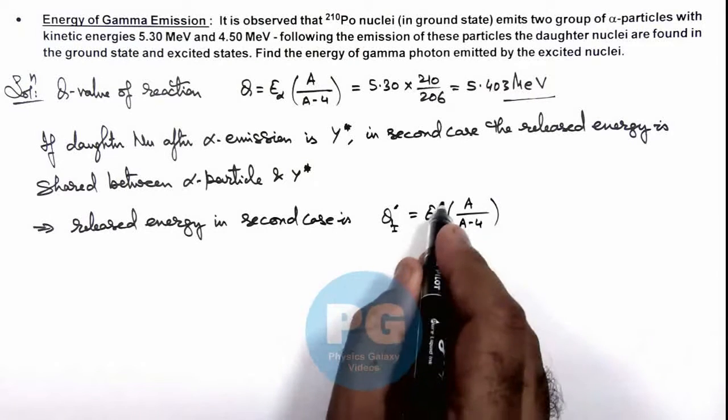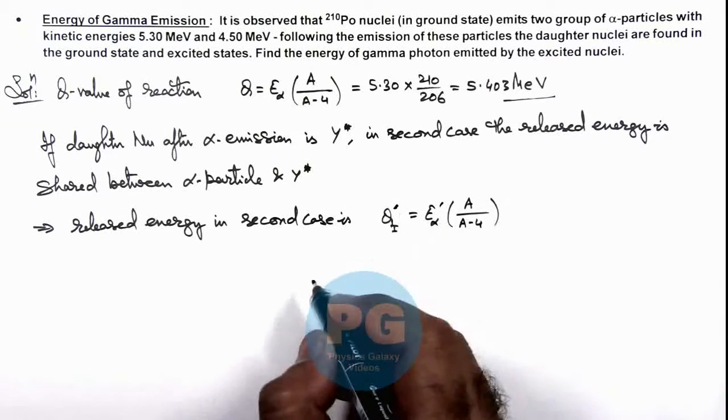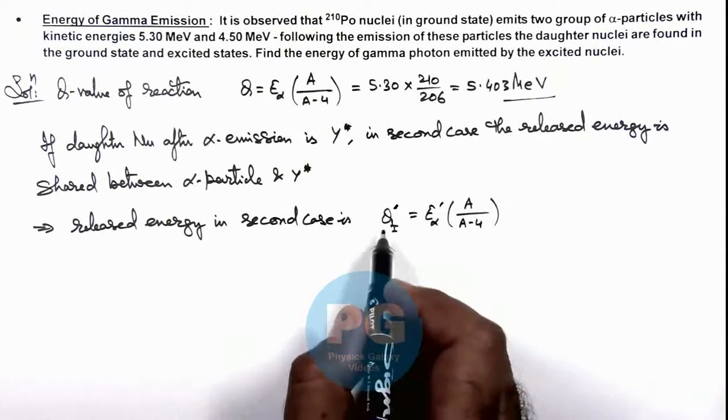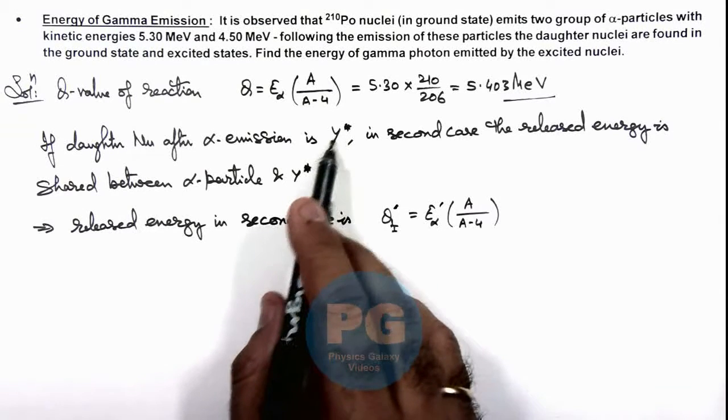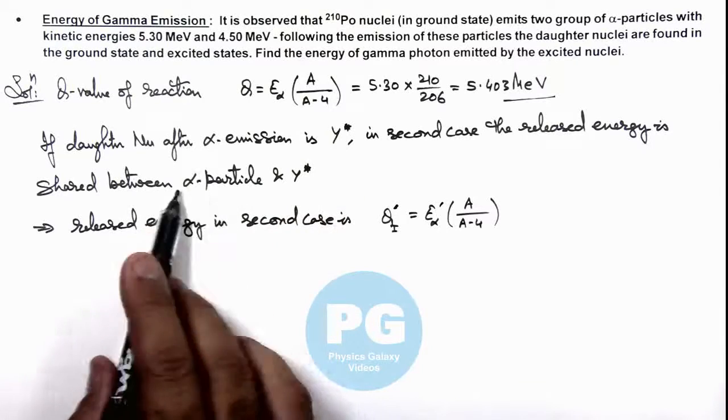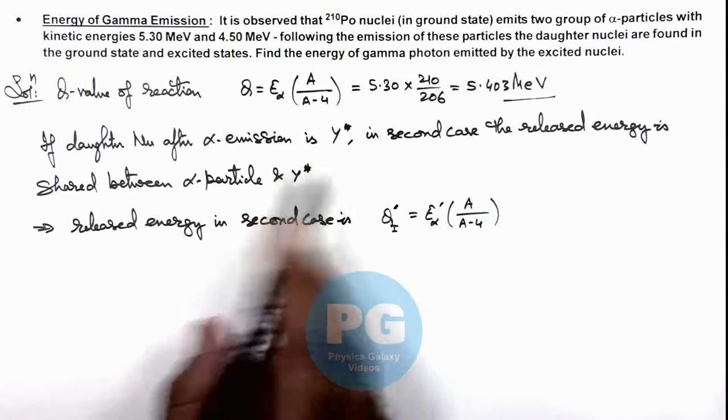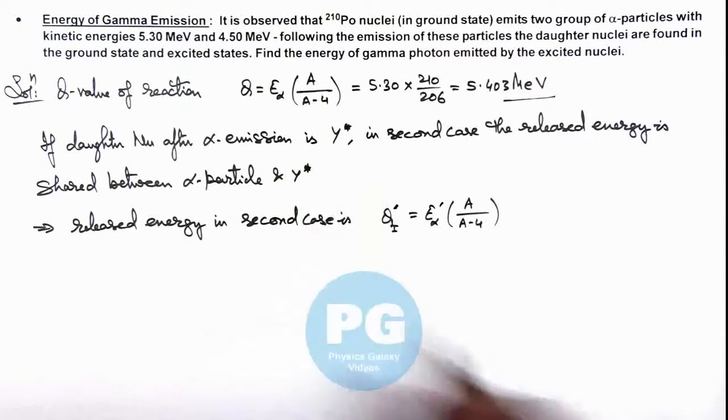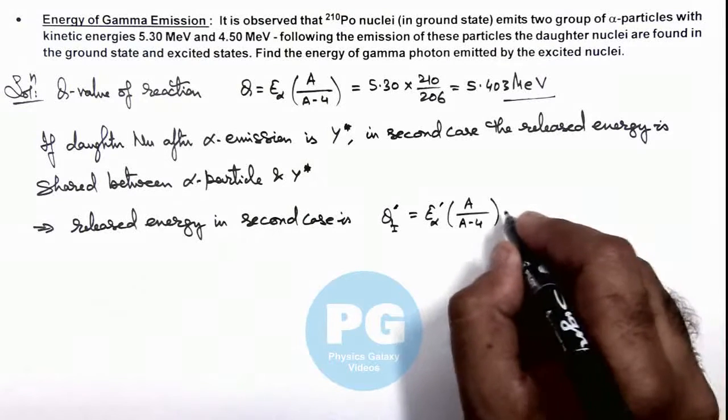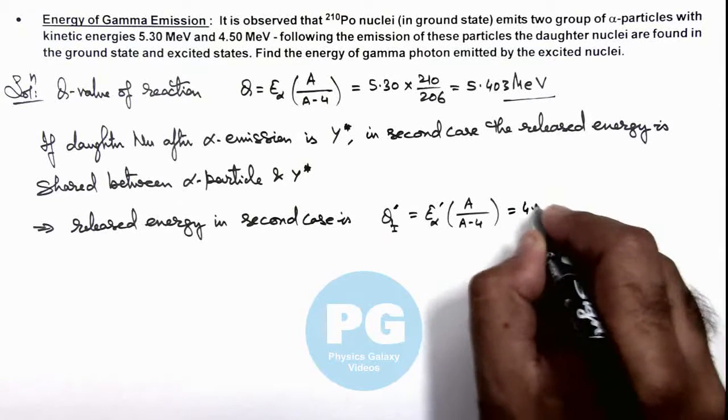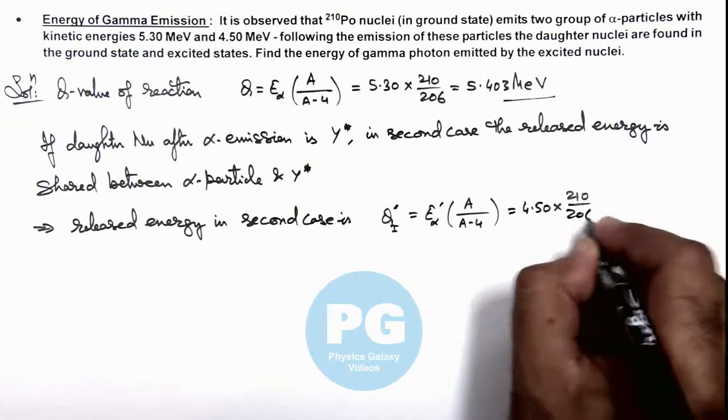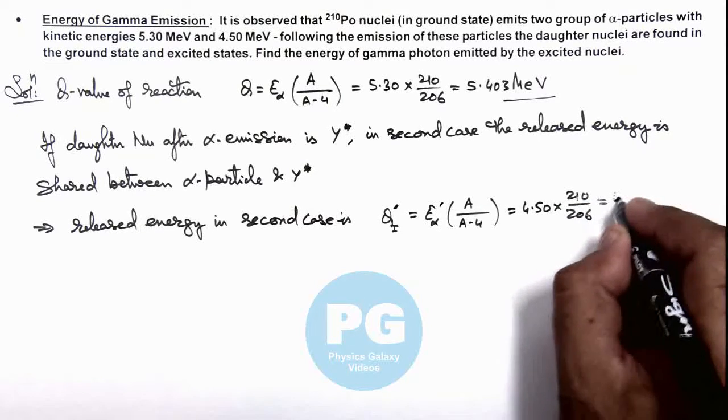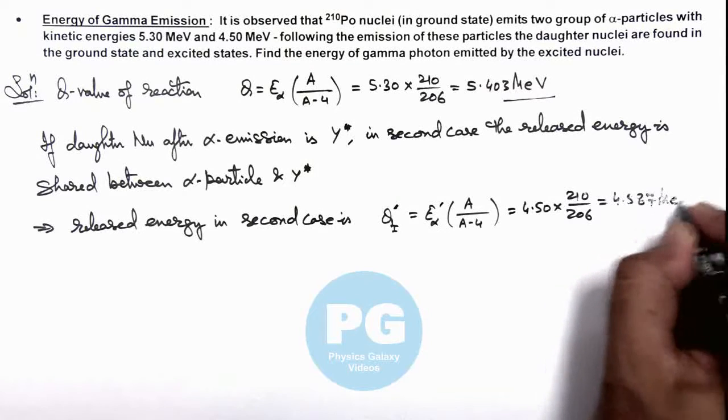I am writing this prime because we are considering the excited daughter nucleus along with alpha emission, which later releases gamma emission. The total released energy is 4.50 × 210/206 = 4.587 MeV.